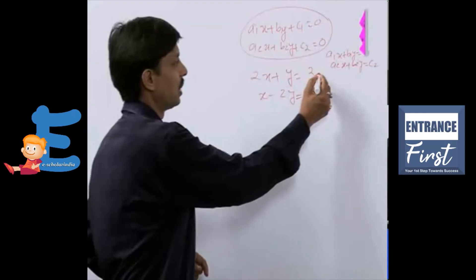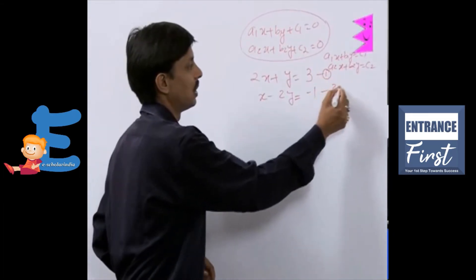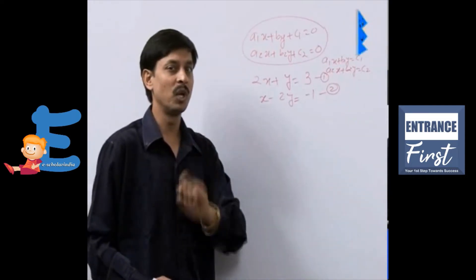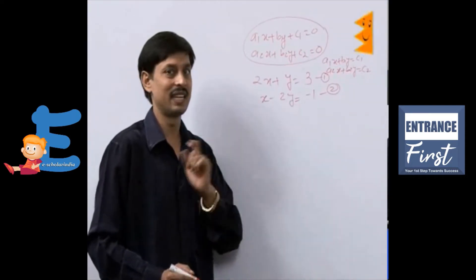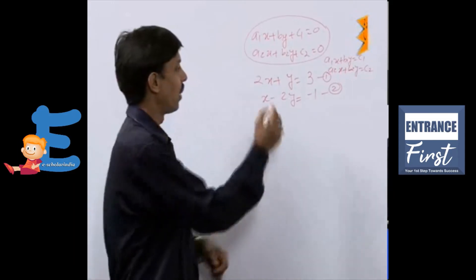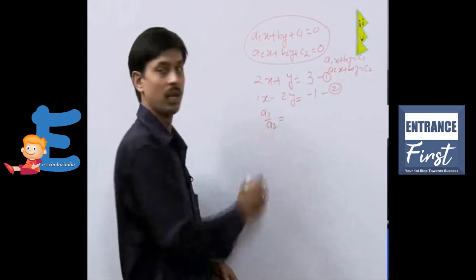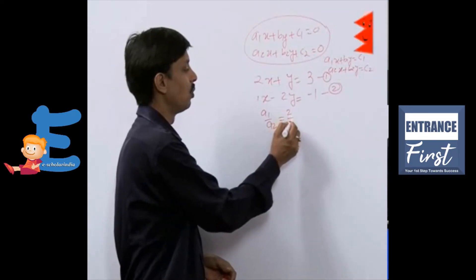Now, this is equation number one, this is equation number two. We want to check what type of solutions these lines have. To find it, we are going to write a1 by a2. A1 by a2 is 2 by 1.